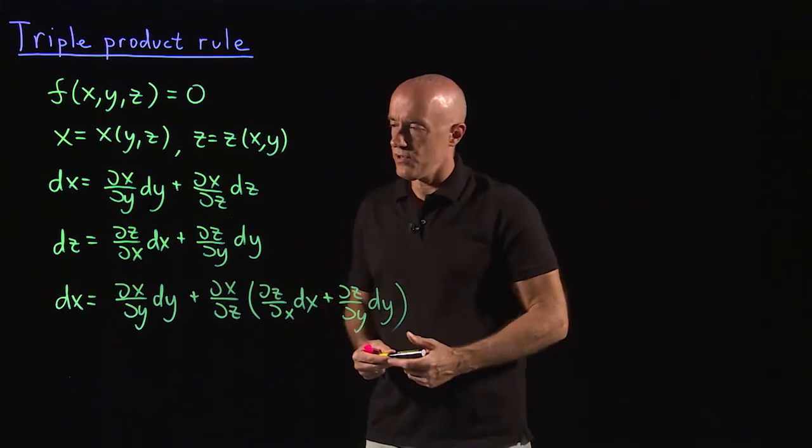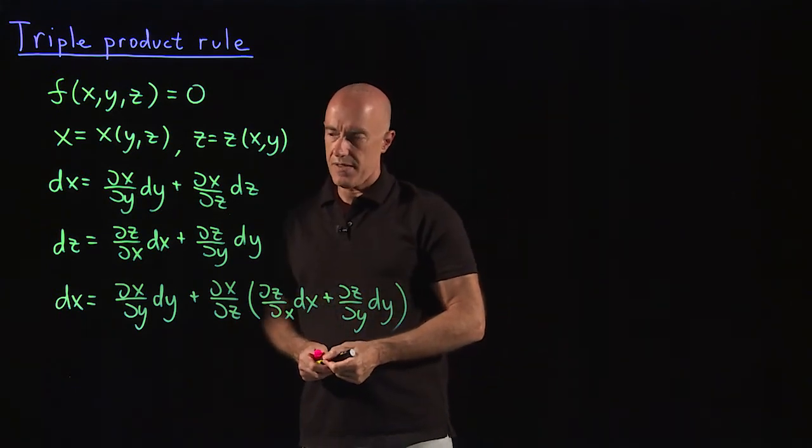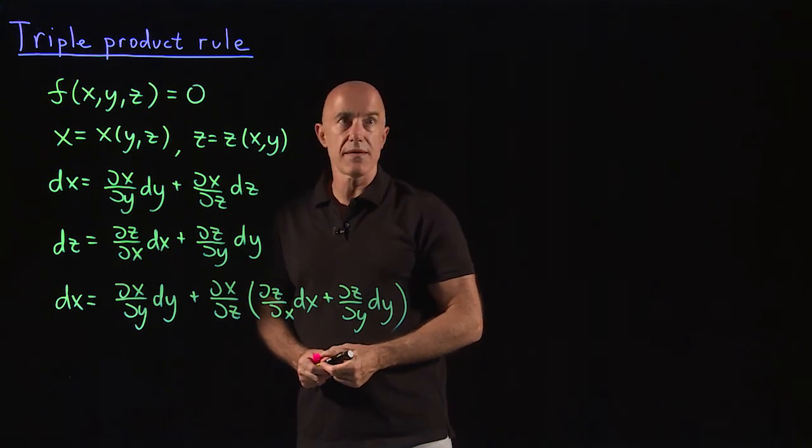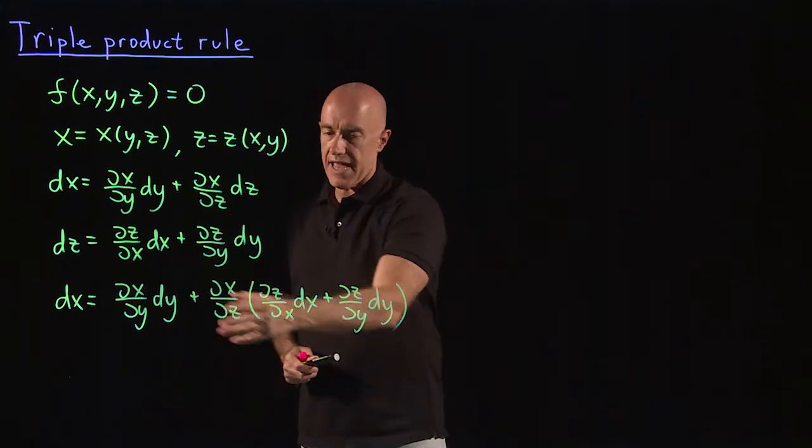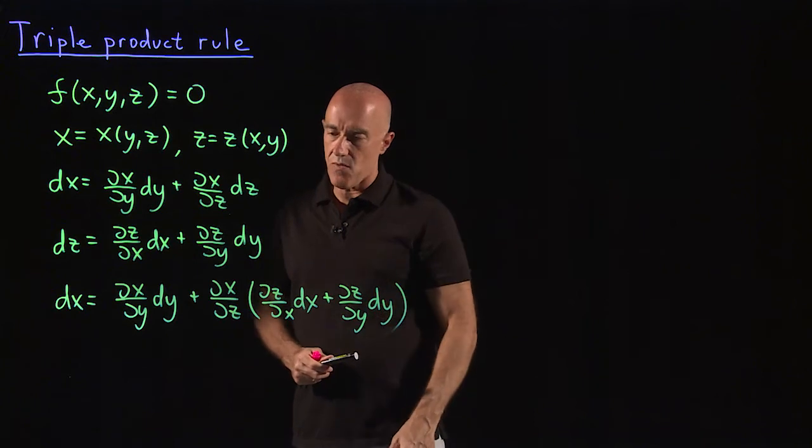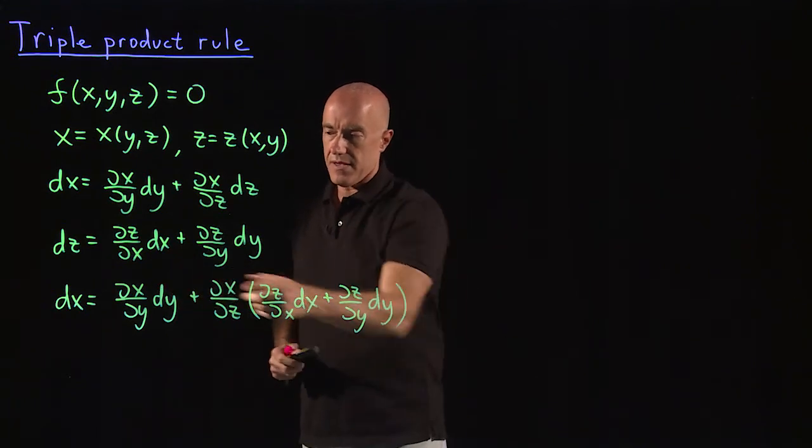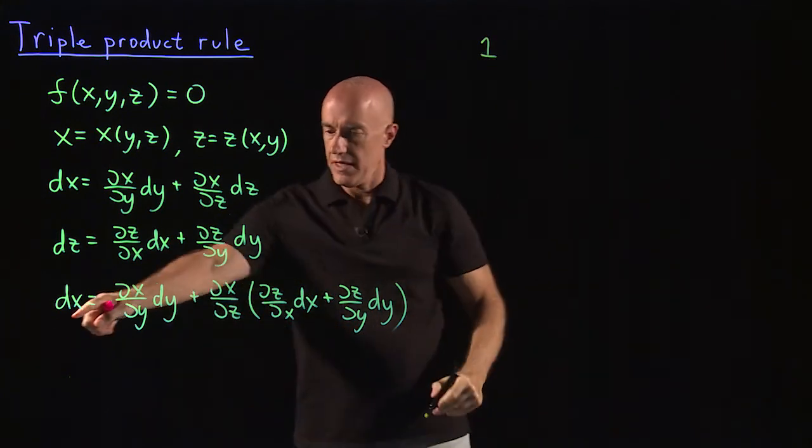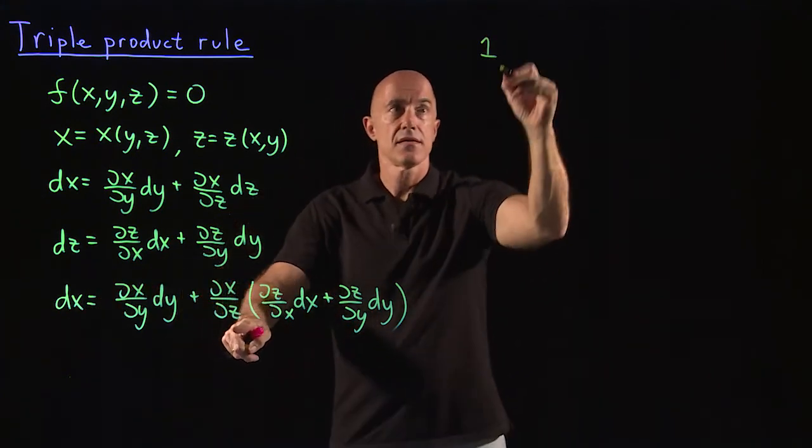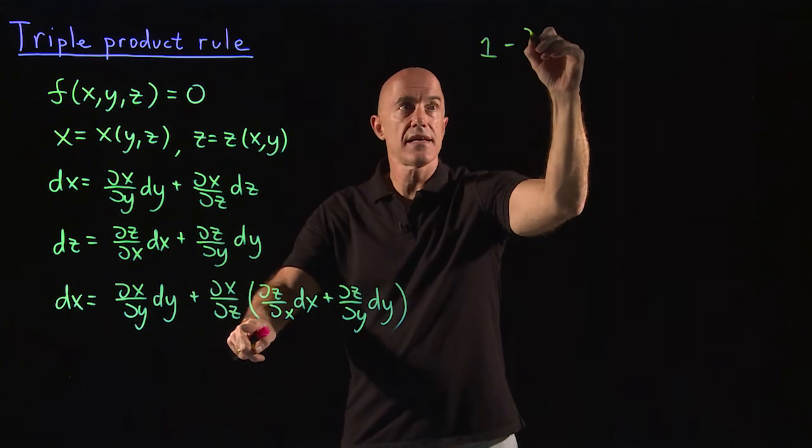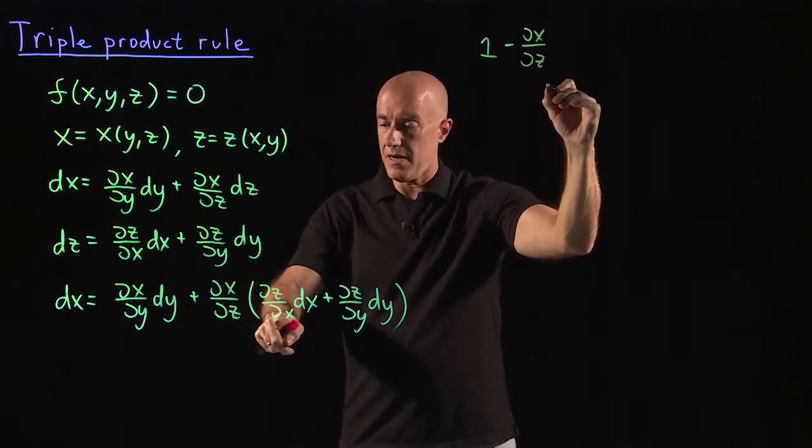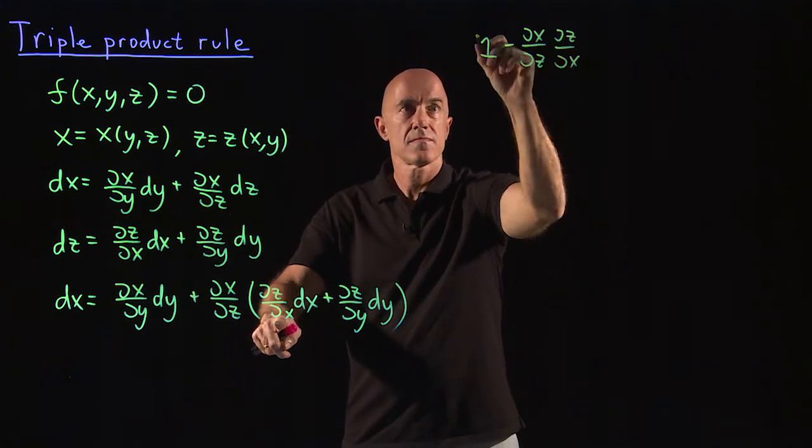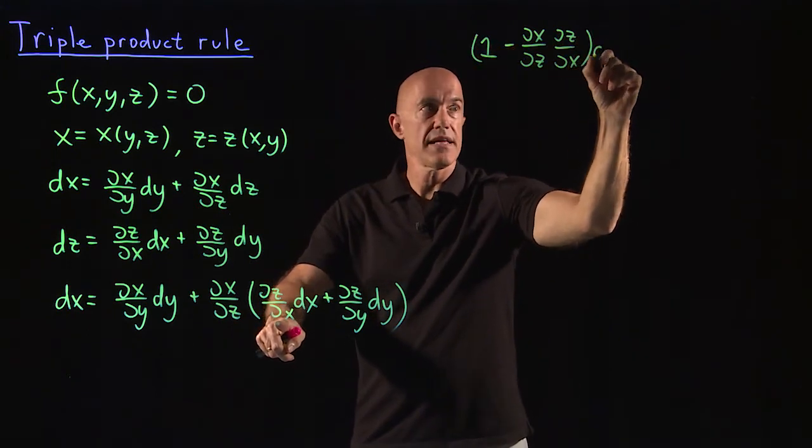The next obvious thing to do is to group the dx terms and the dy terms on the same side. So if we put the dx on the left side and the dy on the right, the dx will end up with a 1 here and then minus dx dz, dz dx times dx.